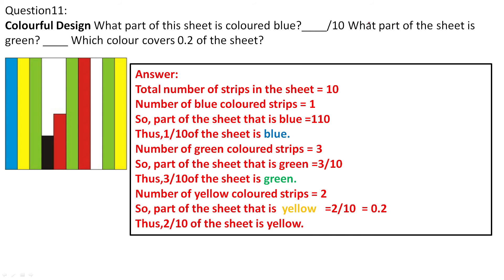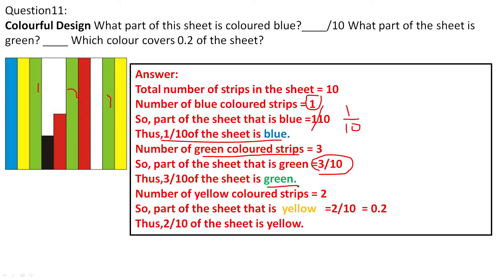Colorful design — what part of the sheet is colored blue? There are 10 strips total. One strip is colored blue, so blue = 1/10 of the sheet. Green color: 3 strips out of 10, so green = 3/10. Yellow: 2 strips out of 10, so yellow = 2/10 = 0.2. In the second sheet divided into 100 equal parts, each box is 1/100. There are 10 blue boxes: 10/100 = 1/10 = 0.1 of the sheet.